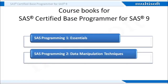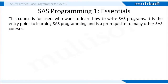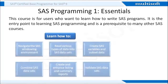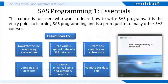In order to prepare for this certification, you need to study two books: SaaS Programming 1 Essentials and SaaS Programming 2 Data Manipulation Techniques. The SaaS Programming 1 Essentials course is for users who want to learn how to write SaaS programs. It is the entry point to learning SaaS programming and a prerequisite to many other SaaS courses. In terms of skills, you learn how to navigate the SaaS windowing environment, read various types of data into SaaS datasets, create SaaS variables and subset data, combine SaaS datasets, create and enhance listing and summary reports, and validate SaaS datasets.